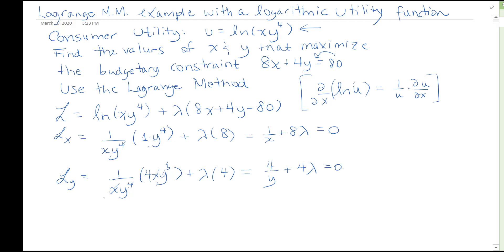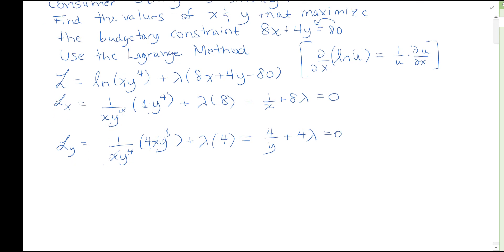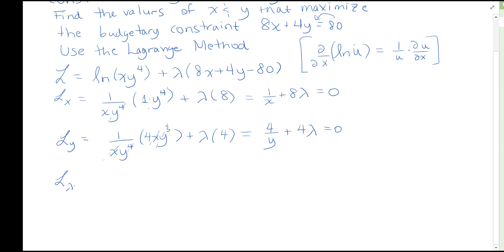Set both of these equations equal to 0. And finally, partial derivative with respect to lambda of the Lagrange function is going to be 8x plus 4y minus 80 which is also equal to 0.